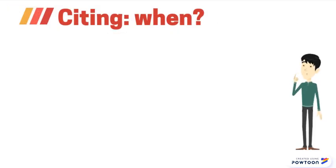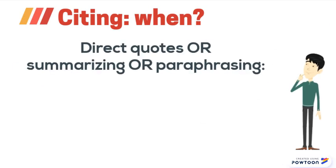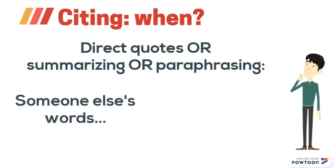What to cite is really straightforward in theory, but can be confusing when you're in the middle of writing your paper, so here are a few examples. If you directly quote, summarize, or paraphrase another person's words or ideas, you have to cite them. Simply changing or rearranging someone's words doesn't mean that you can take credit for them.